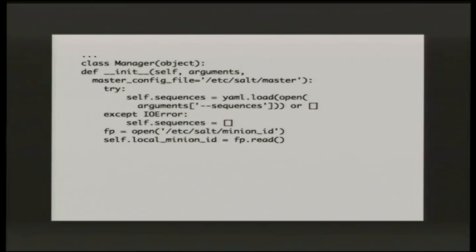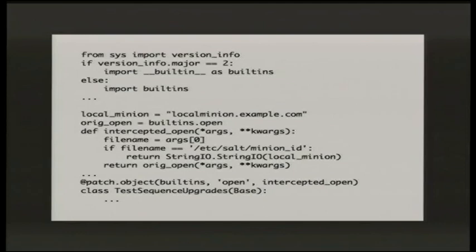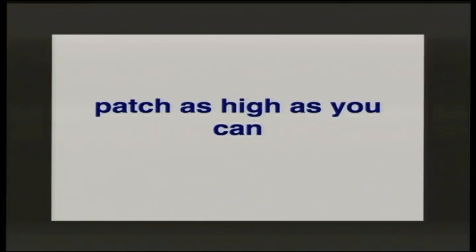In my code I do an open of the /etc/salt/minion_id file. When I was writing this talk on a laptop that doesn't have Salt installed, all my tests were blowing up because there is no salt minion_id file. I needed to work out how to deal with that and came up with a solution — which is the wrong solution. That solution was replacing builtins.open so that when you open that particular path it returns a file object with the information I want, and otherwise just uses the default open. That works, but it's not the right answer.